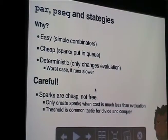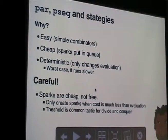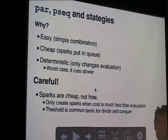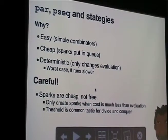Why would we use this type of parallelism in Haskell? It's easy, the sparks are cheap, and deterministic is probably the big one - they don't change your computation. The worst thing you can do is make it go a little bit slower by telling things to run in parallel that shouldn't because they're not going to give any speedup. So worst case you run slower - why not use this? Be careful though: they're cheap but not completely free. You only want to do it when the cost is less than the speedup you're going to get. You don't just chuck it in everywhere - only where you think it's going to be a benefit.